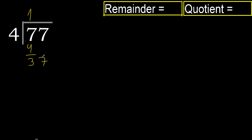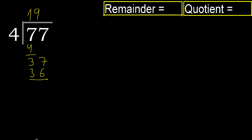Next. We now have 37. 4 multiplied by 9 is 36 — it is not greater. 37 minus 36 is 1.